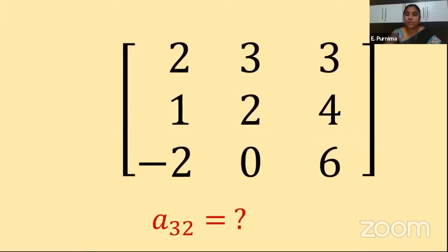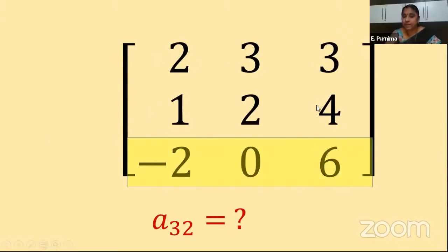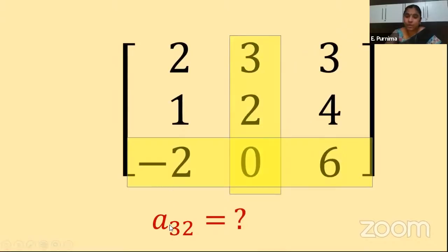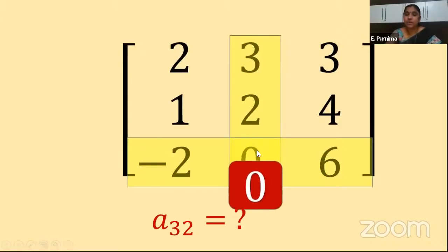One more example using the same matrix: find the element in position a₃₂ - that is third row and second column. Reversing the indices from before: third row (this entire line), second column. The element at the intersection of the third row and second column is zero. So a₃₂ = 0.